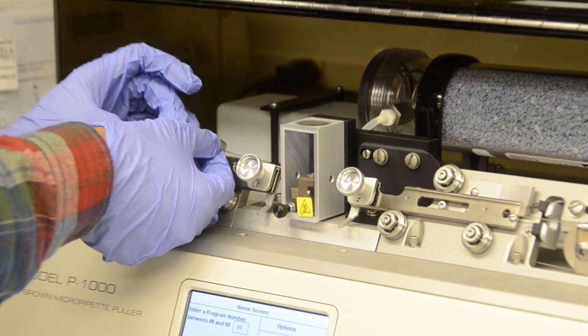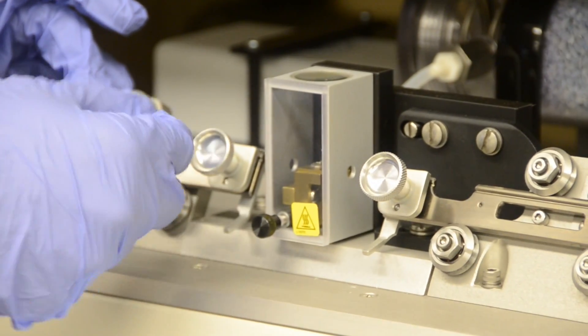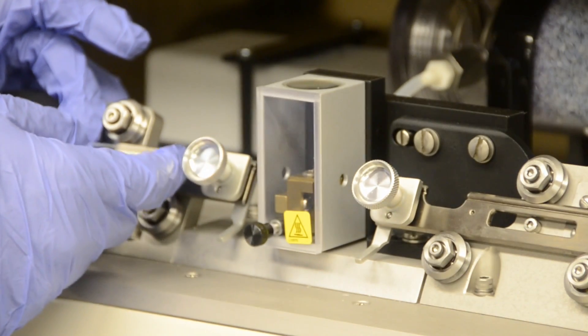Slide the capillary tube through the silver filament within the box at the center of the machine. Be careful not to break the capillary tube.